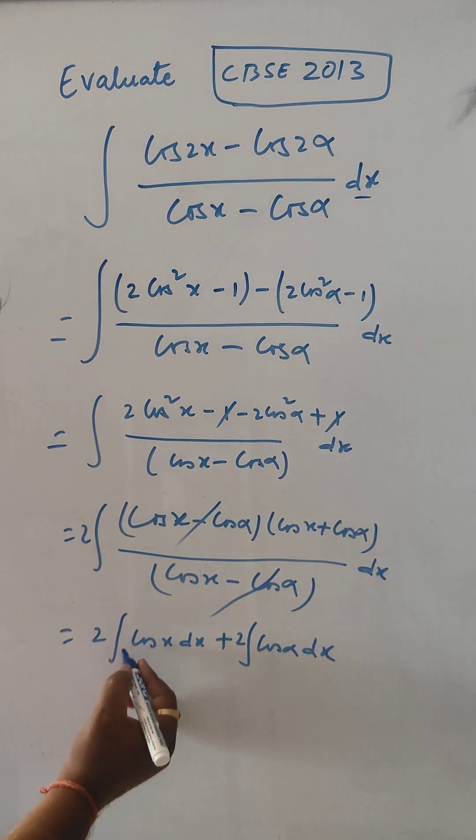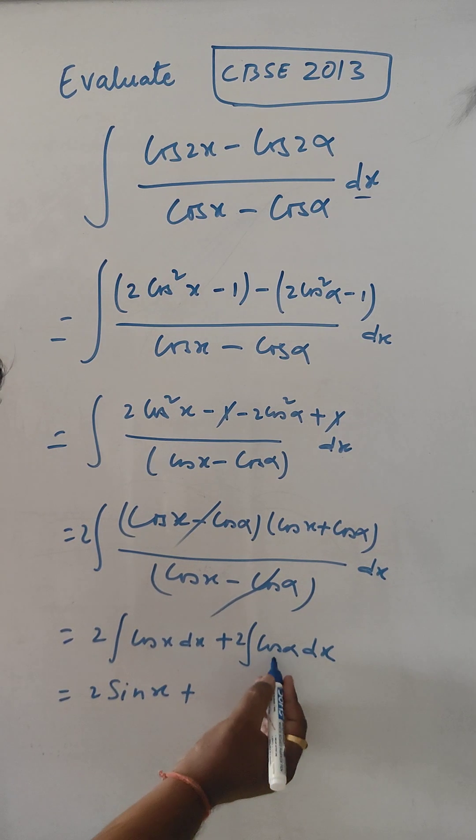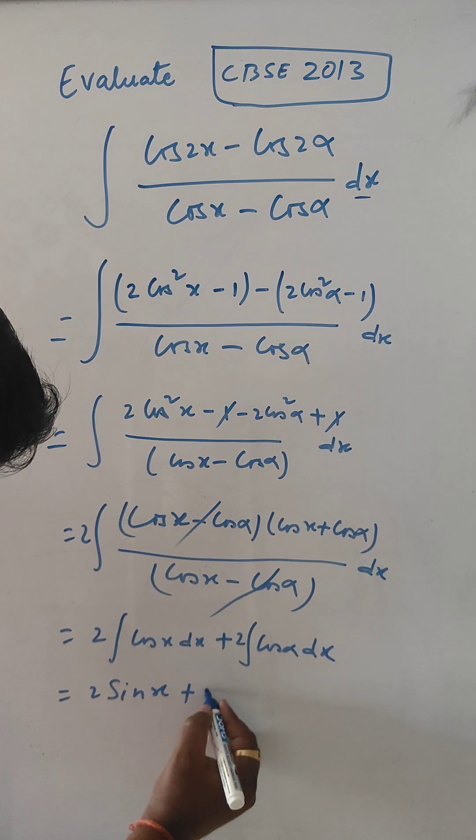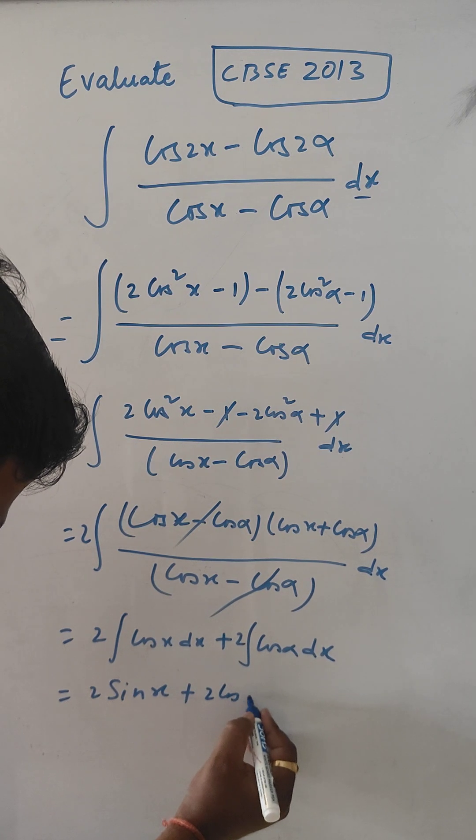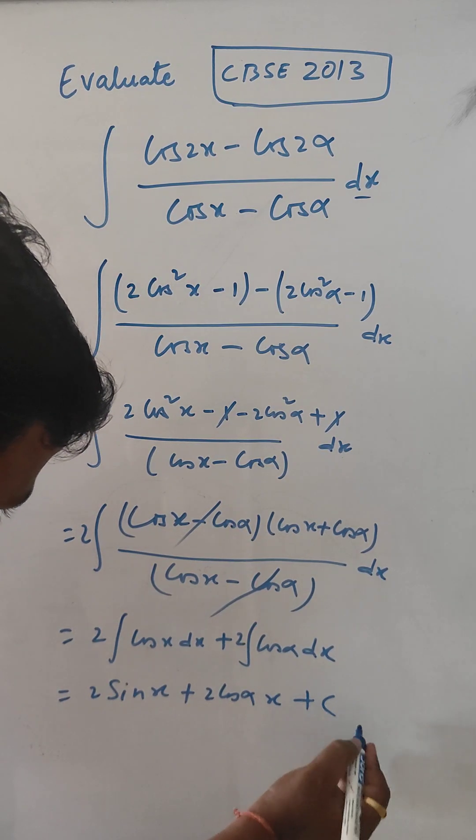For this, the integral is 2 sin x. Note that cos α is a constant, so the second term becomes x, plus the constant of integration c.